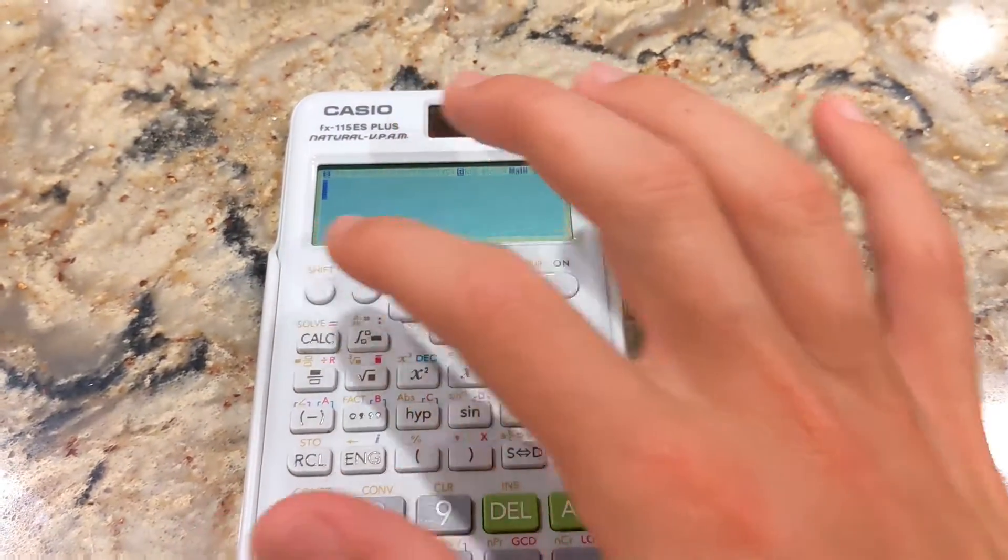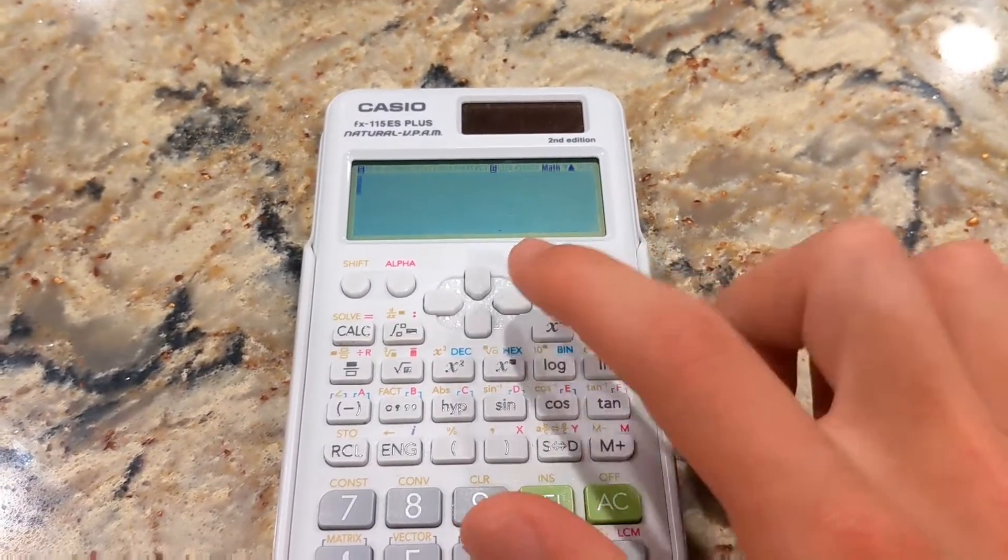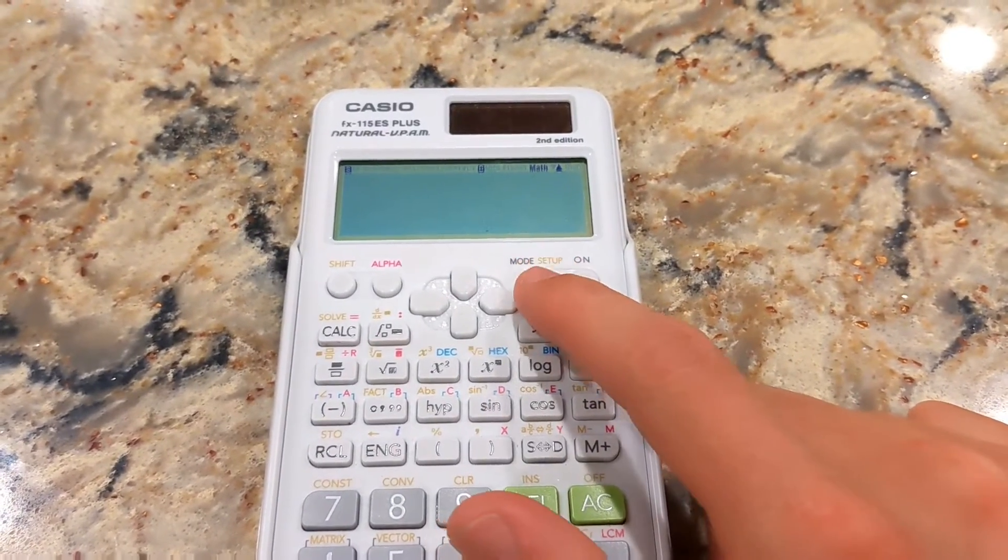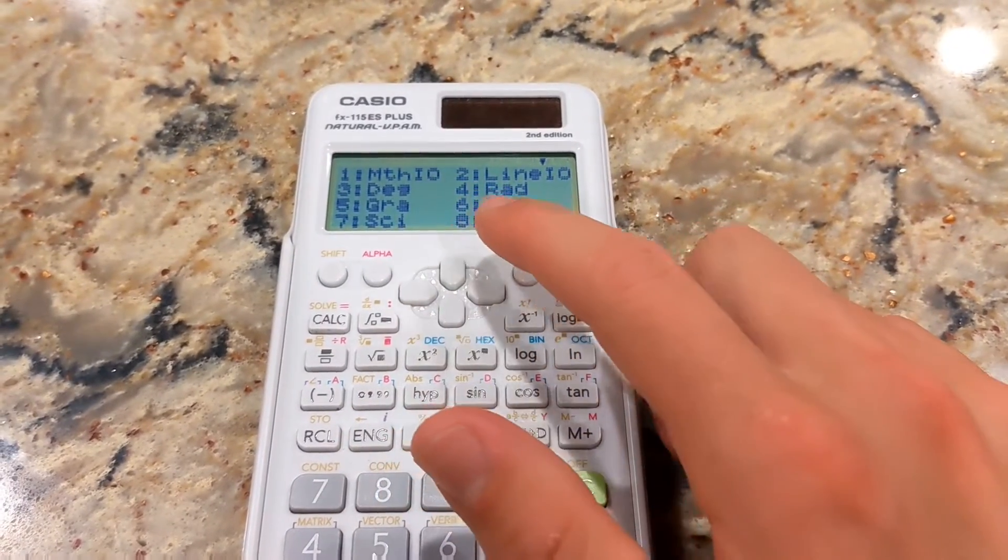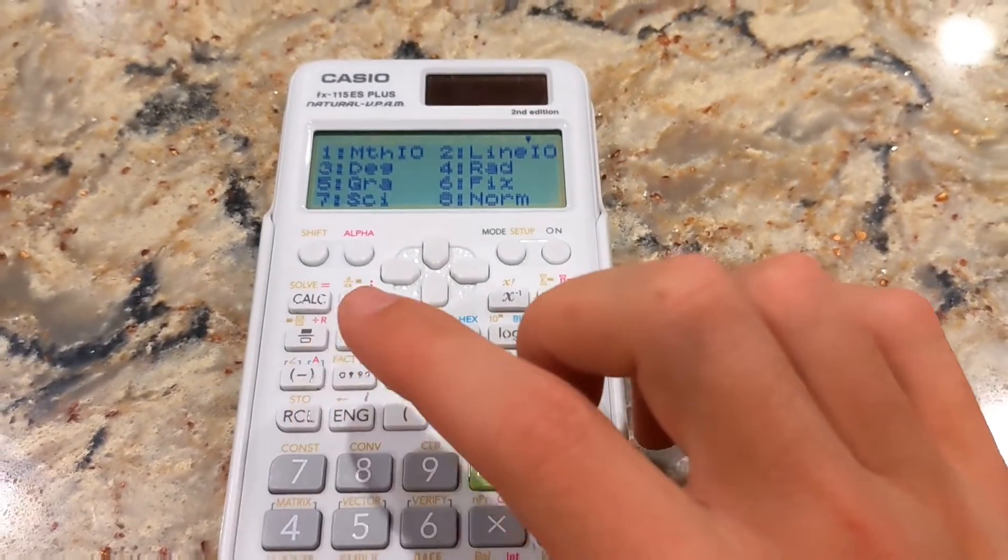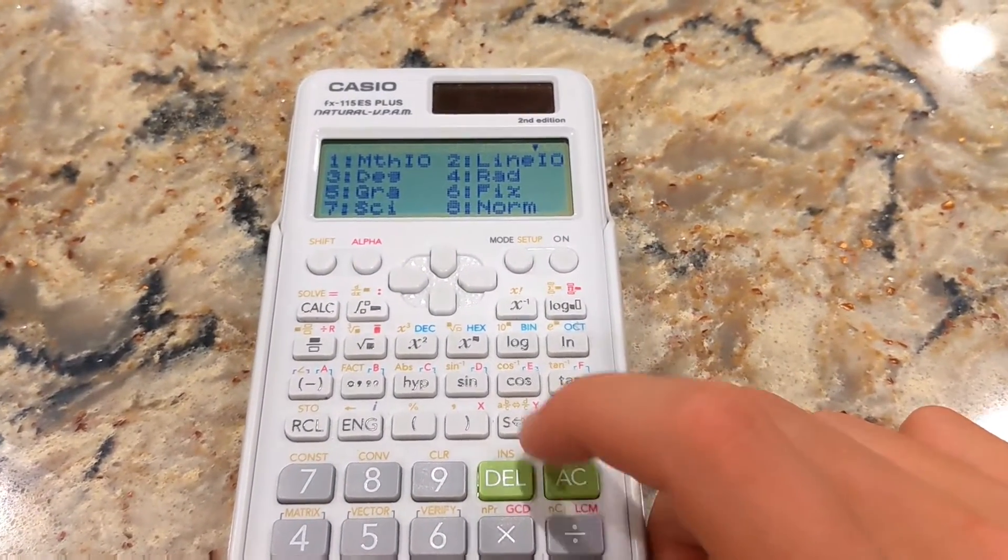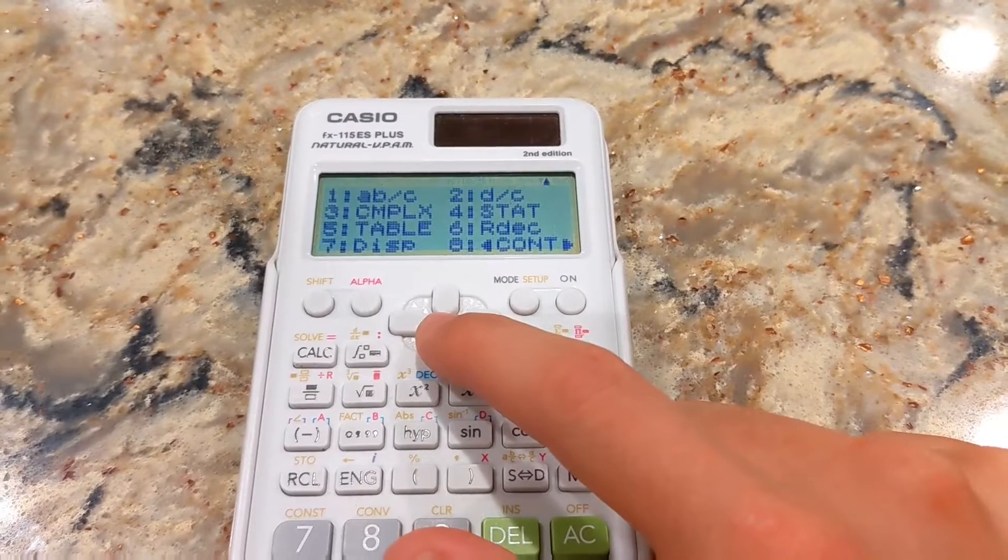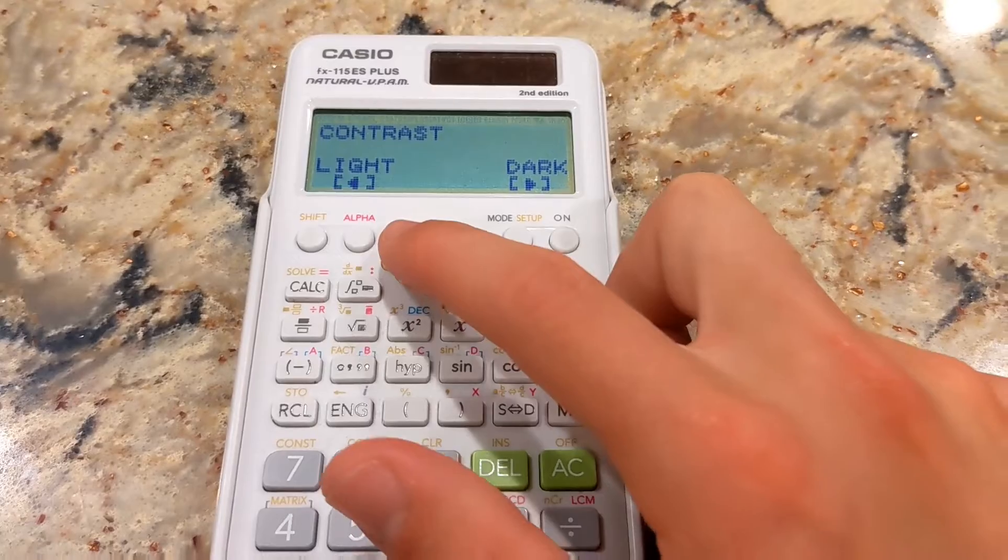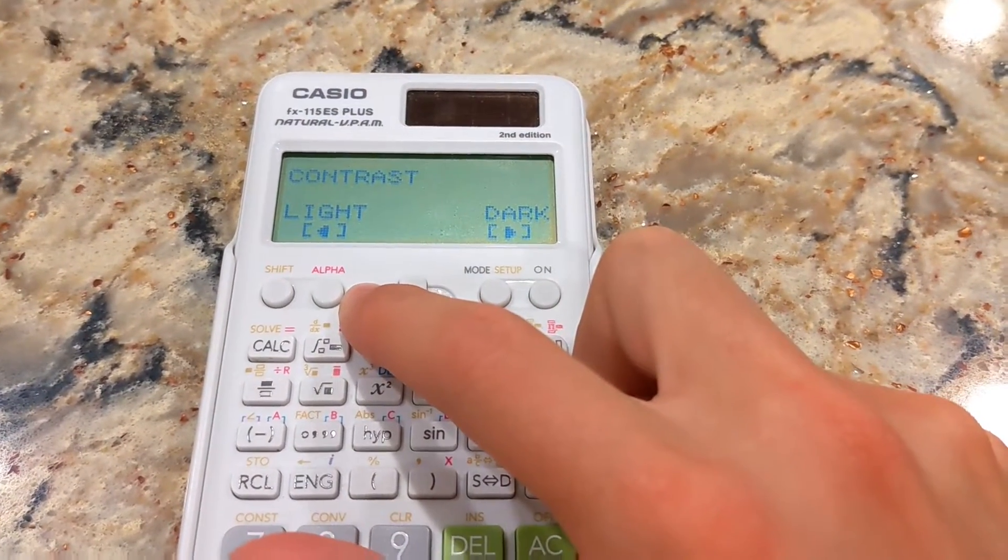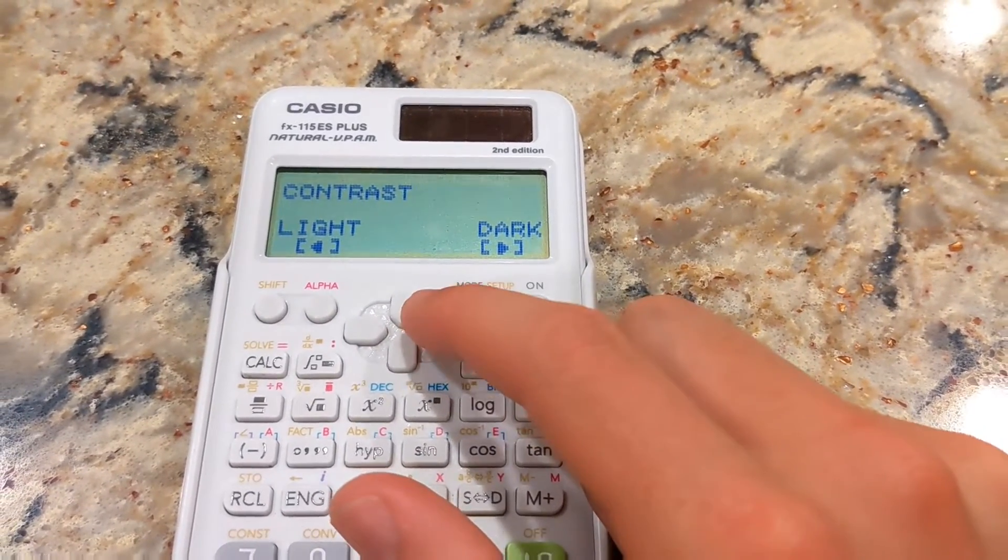I put this into the textbook display, but you can change that by pressing Shift Mode button, which is set up in Shift. And then there's Math I.O. and Line I.O. I'm going to leave it at that, but you can change the display on here and a bunch of other settings. Here's a cool one, actually. The contrast. I can literally change the color of the keys.